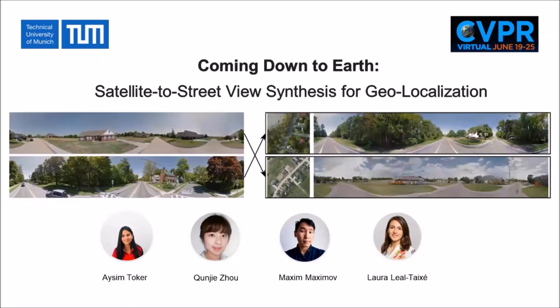Hello and welcome to our presentation. My name is Aysim Tokay and the work I'm presenting here is called Coming Down to Earth: Satellite-to-Street View Synthesis for Geo-Localization. This work is done at the Dynamic Vision and Learning Group at Technical University of Munich.